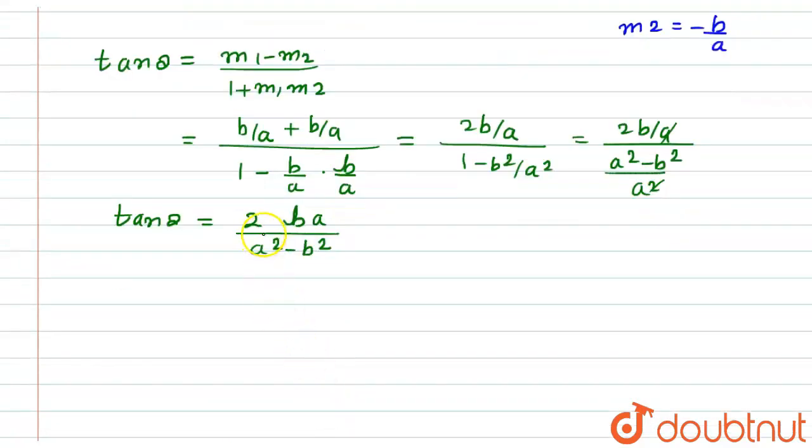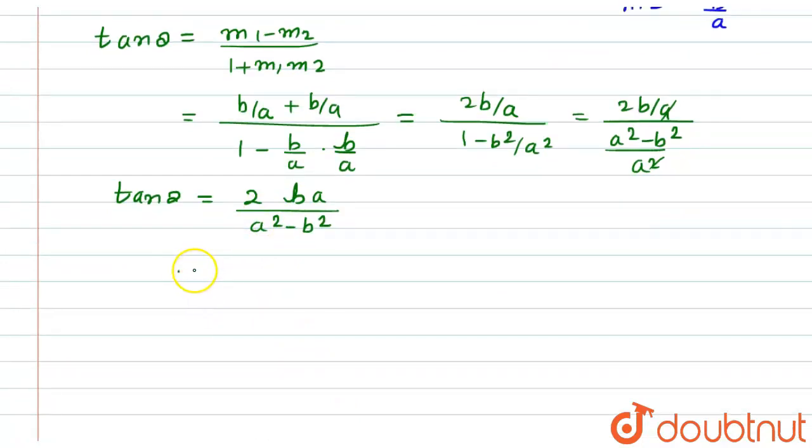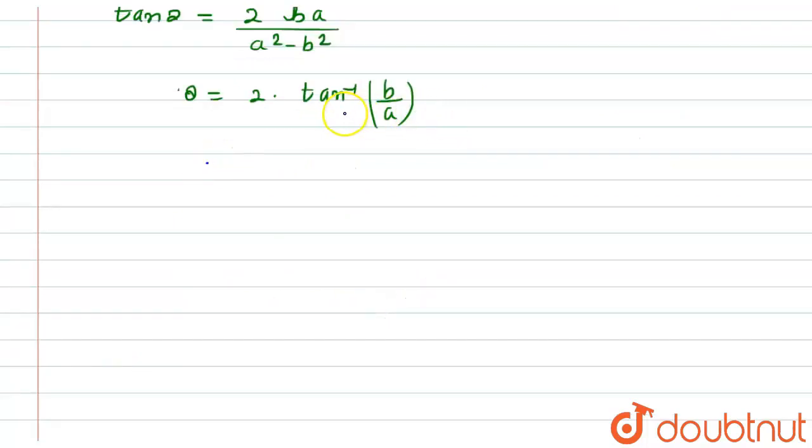Now if you see, this is indicating the formula here. According to formula, the value of theta will become equals to 2 times tan inverse of b upon a. Now if you see the term tan inverse of b upon a, this is nothing but equals to sec inverse of e, where e represents the eccentricity. So here theta will become equals to 2 into sec inverse of e, and this is our final answer.